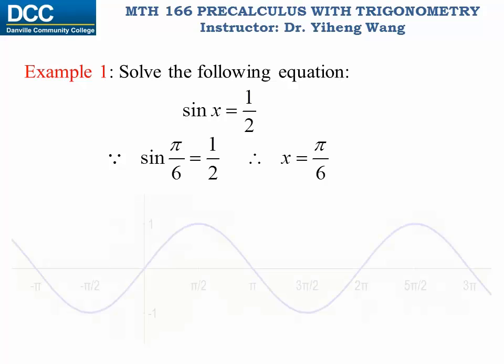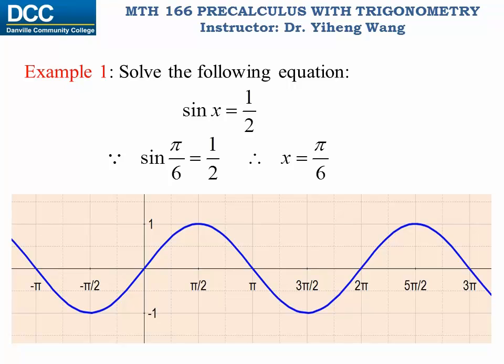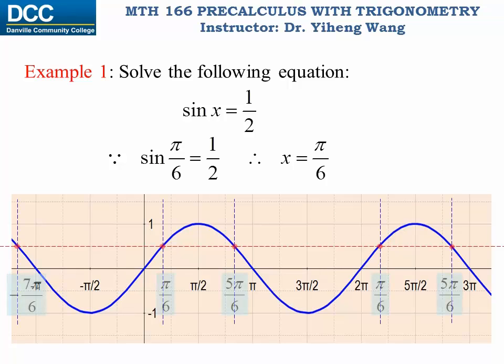In fact if you look at the graph of the sine function and draw a line at y equals to one-half, you can see that this line will intercept with the graph at multiple locations, indicating multiple solutions to this equation. In fact, there should be an infinite number of solutions. How do we include all the possible solutions, but not more, in a simple expression?